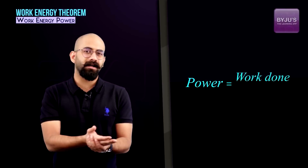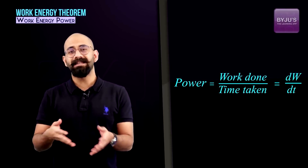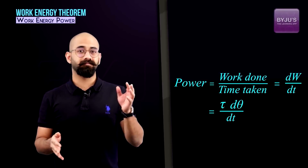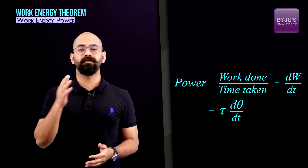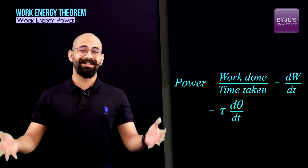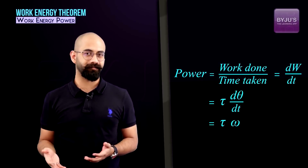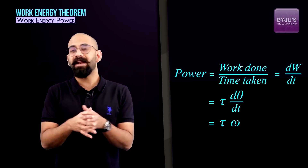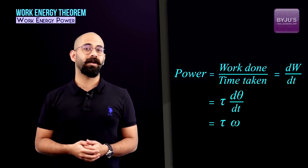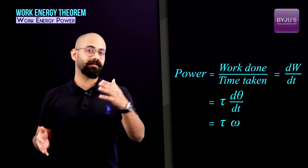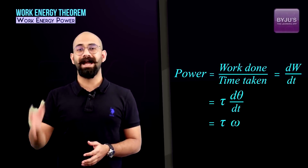Finally, let's calculate the power delivered by a torque. Power is work done divided by time, or dW/dt. Since W equals τ·dθ, then dW/dt equals τ·(dθ/dt), and dθ/dt is omega. So the power delivered equals torque times angular velocity, τ·ω. This is analogous to translational mechanics, where power delivered by a force is force times velocity — here it's torque times angular velocity.